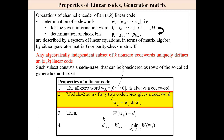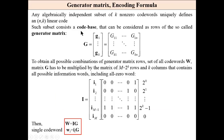Generator matrix: a code base consists of K codewords that are linearly (algebraically) independent. The generator matrix G has K rows — G1 through GK — which are K codewords that are algebraically independent. To obtain all possible codewords, matrix G must be multiplied by a matrix of M = 2^K rows and K columns, containing all possible information words including the all-zero word. This is the encoding strategy for a given generator matrix: we multiply the generator matrix by the information word to obtain a codeword.